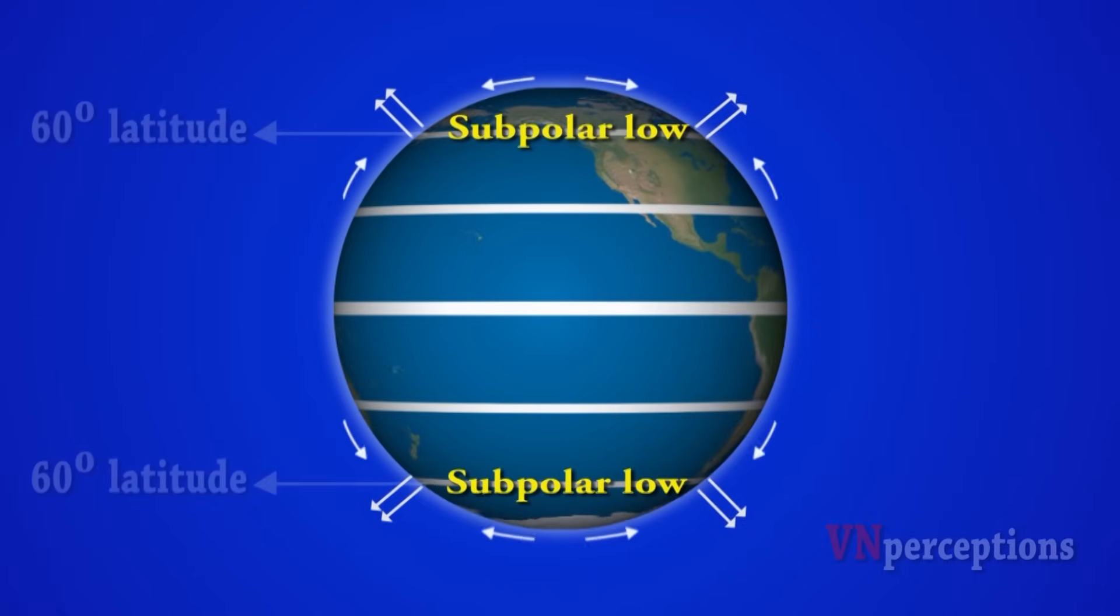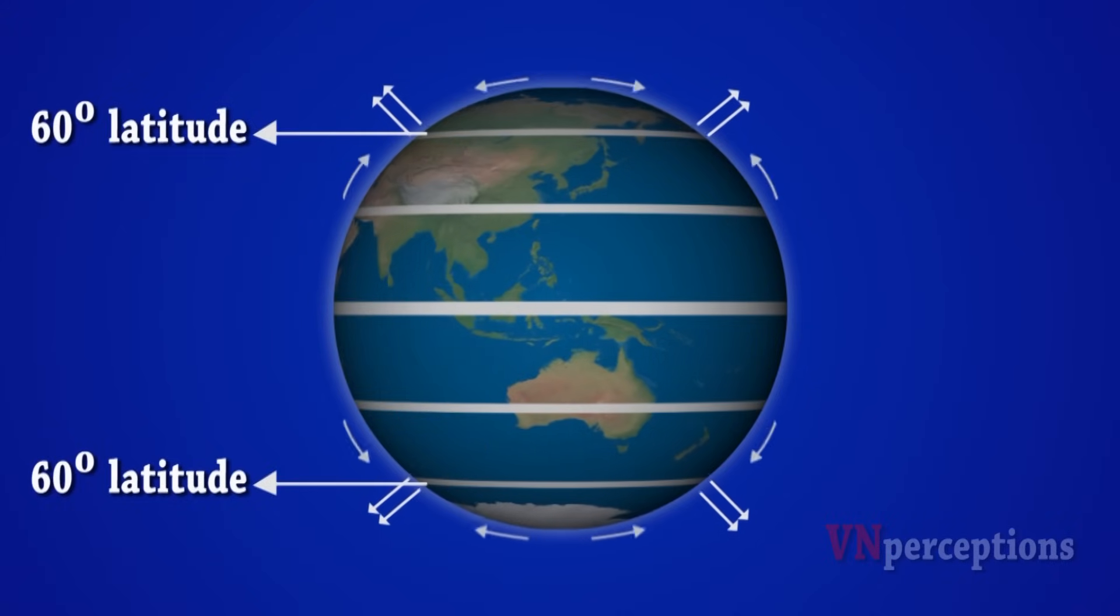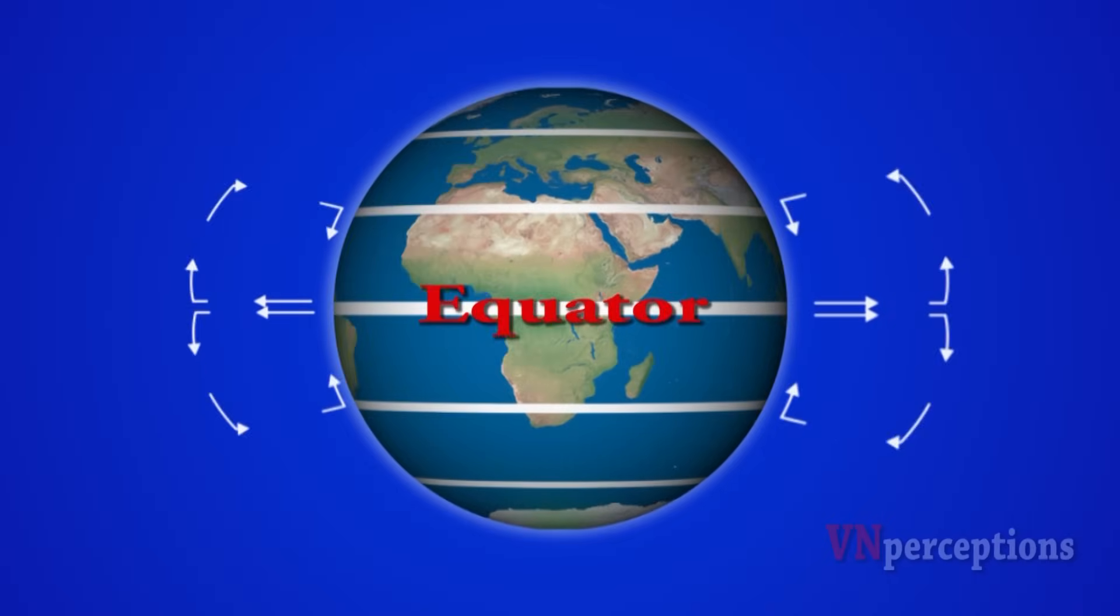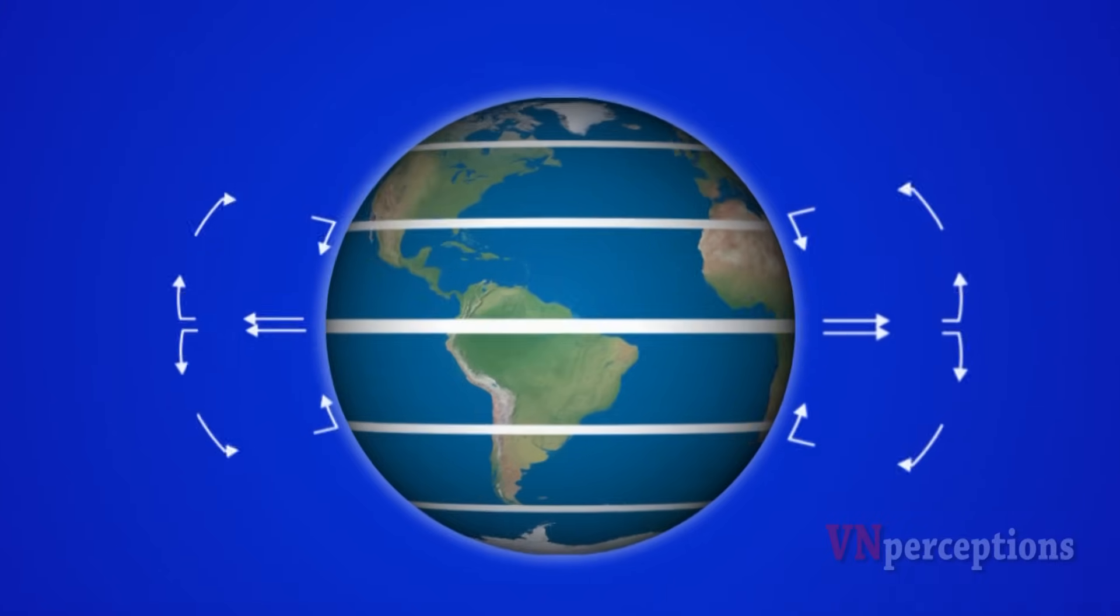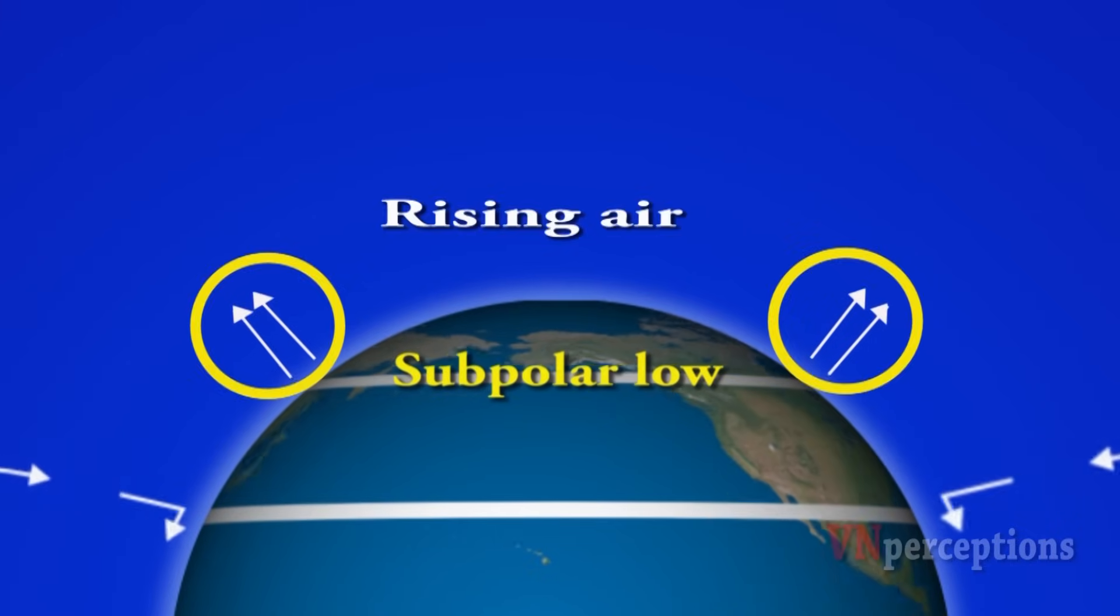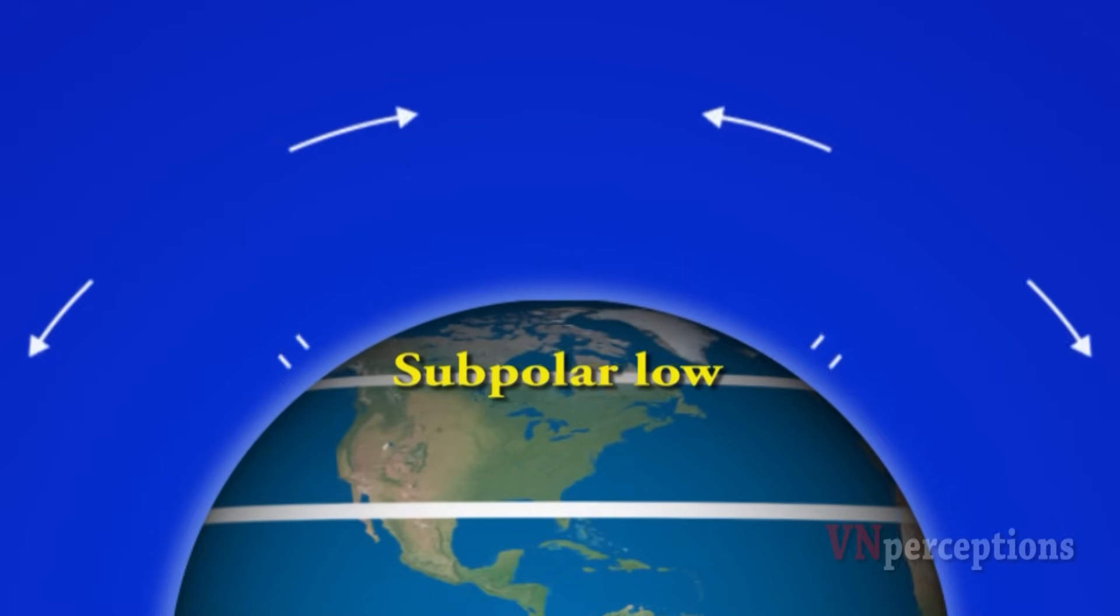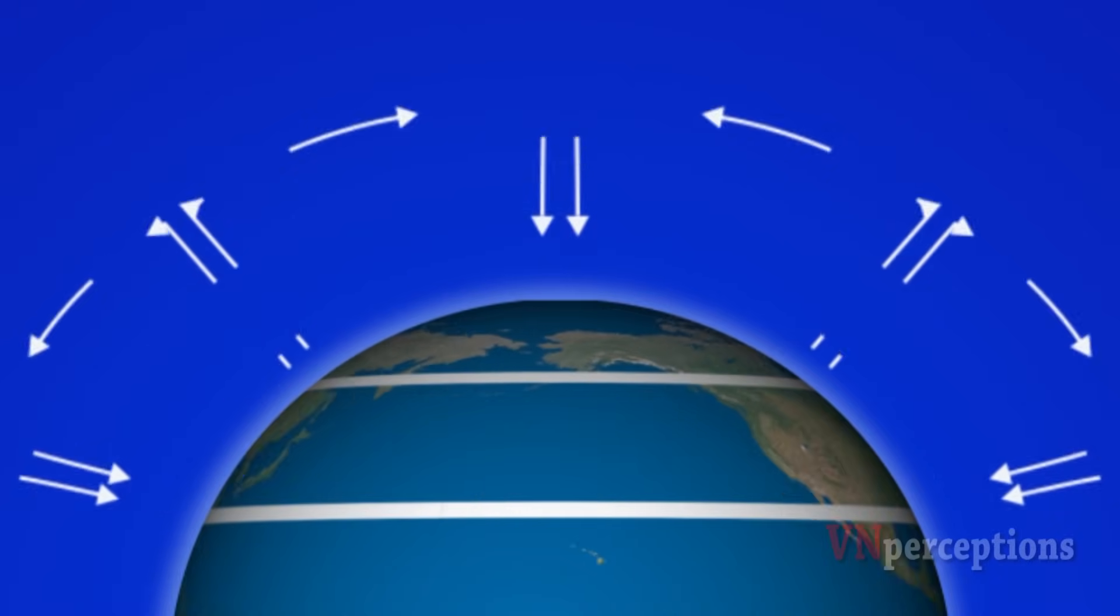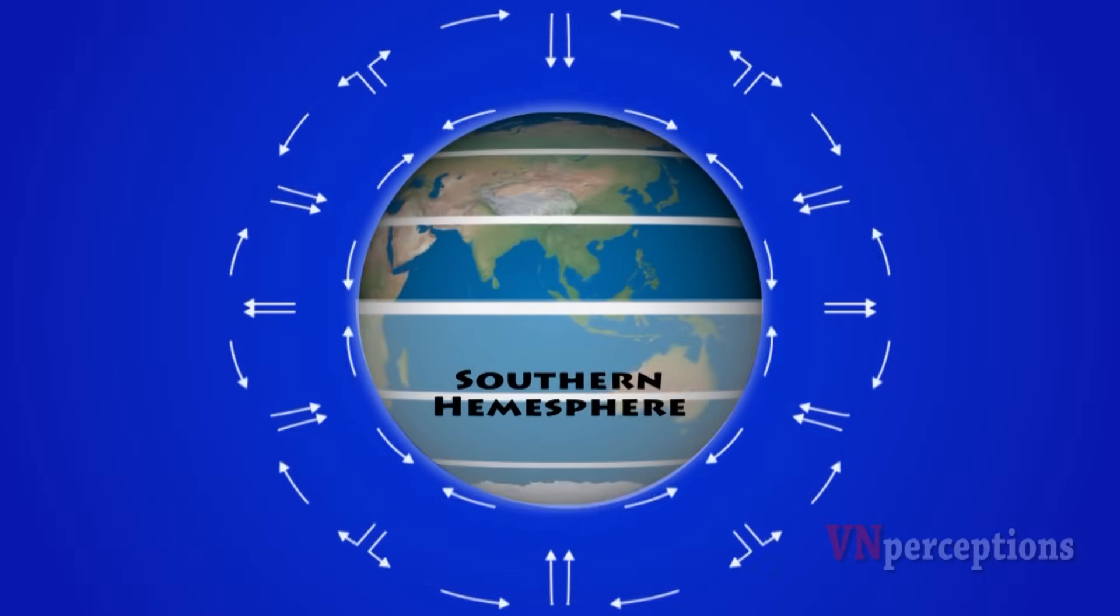Along the equator the air is rising because of convection and at subpolar lows we have rising air because of convergence. This rising air also spreads out, cools and sinks. Same things happen in the southern hemisphere.